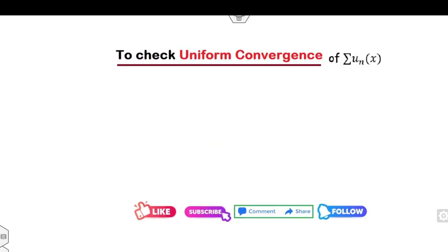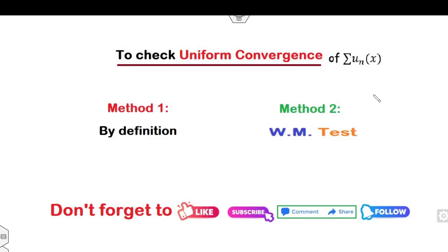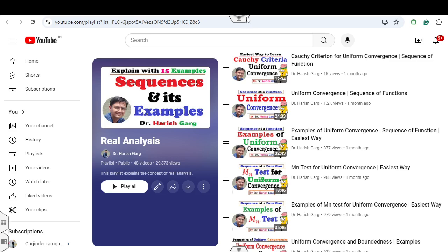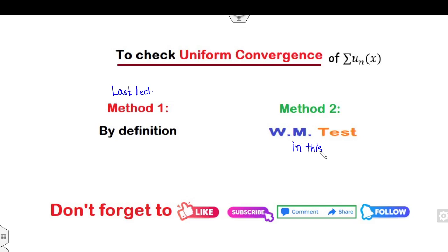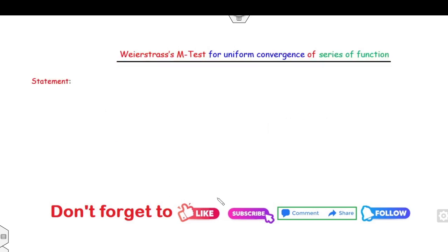Now the objective is to see how we can check uniform convergence of a series, written as summation of u_n or summation of f_n. As discussed in our last lecture, we have two methods: the first method is by using the definition, and the second method is the Weierstrass M test, which we discuss in this lecture.